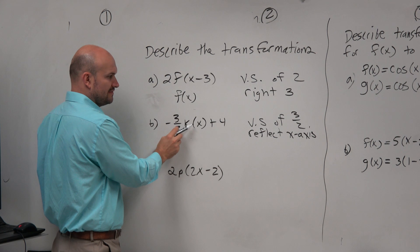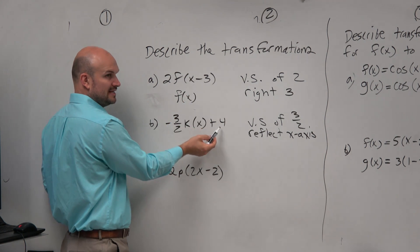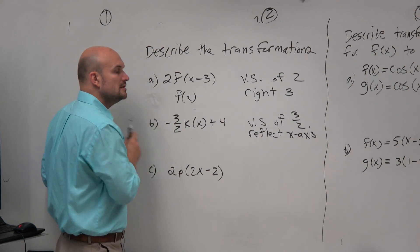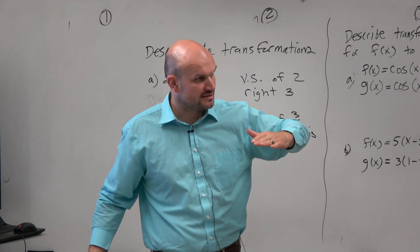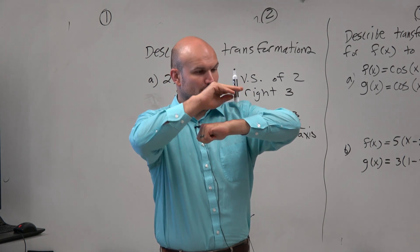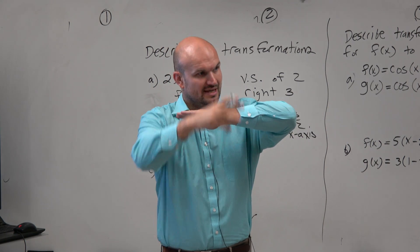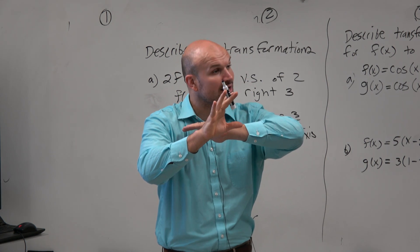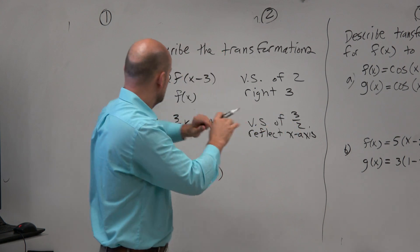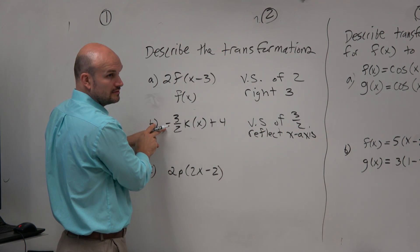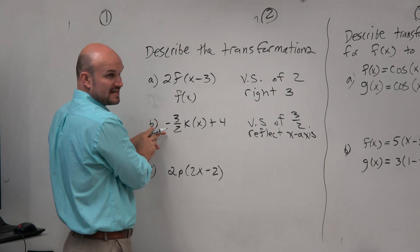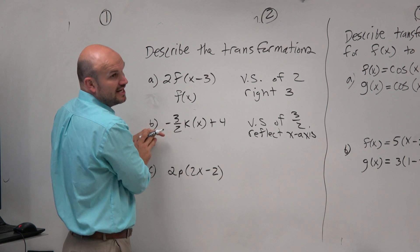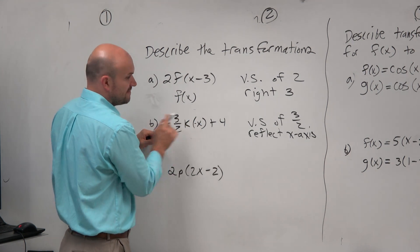Now we're adding a 4 outside of the function. Do you guys see the difference between adding something outside compared to inside? If you reflect across the x-axis, it's a vertical reflection. Anything outside — the negative made you reflect. When you multiply by negative on the outside, that's a reflection about the x-axis. If you multiply by negative on the inside, that would have been the y-axis.